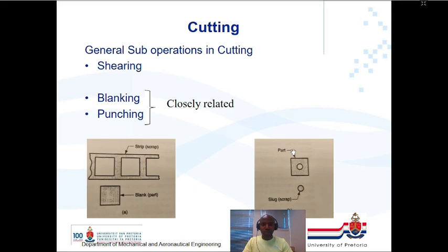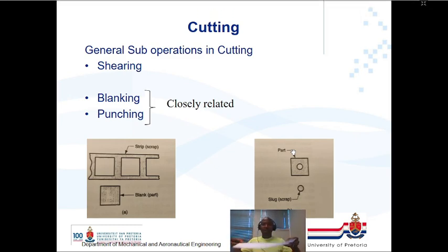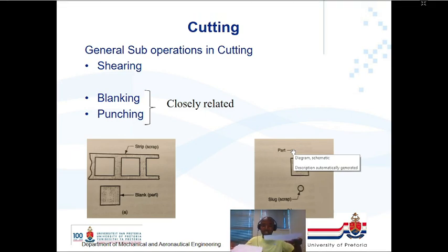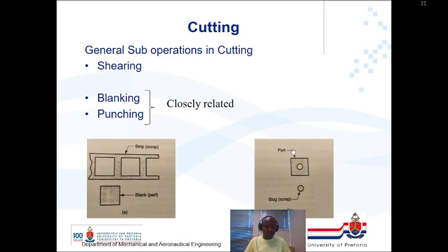When we look at cutting, we have sub-operations: shearing, blanking, and punching. Shearing is a process where you cut the sheet metal — you have a bench applying force on one side and a punch going down on the other side, tearing the sheet into two parts. For shearing, you have a sheet of a certain width and you simply cut across it.